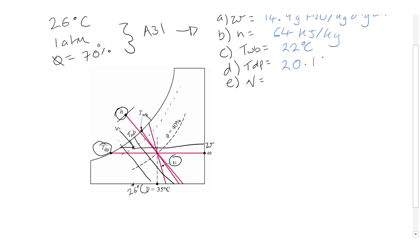Dew point temperature 21 degrees C, and specific volume 0.868 meter cubed per kg dry air. Thanks.